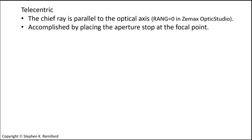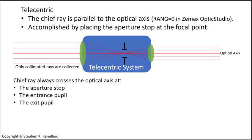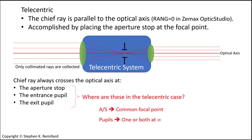A telecentric lens forces the chief ray to be parallel to the optical axis on the object side, on the image side, or on both sides. It is easy to make this happen by positioning a physical aperture stop at the back focal point, the front focal point, or at a common focal point in case there are two lens groups. The parallel orientation of the chief ray presents a problem with locating the pupils, because the chief ray crosses the optical axis at the pupils and at the aperture stop. The entrance and exit pupils in the doubly telecentric system are infinitely far away — and in fact, they are located at infinity.